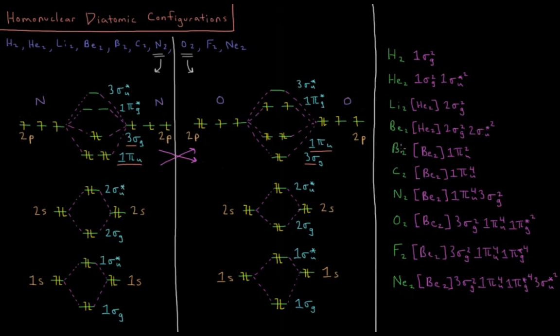For boron-2, we start filling up the πiu level. So one electron here, one there. Two spin-up electrons in different orbitals for this 1πiu level.